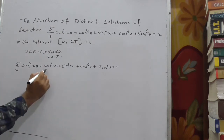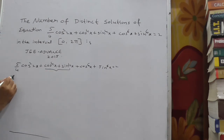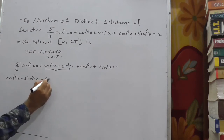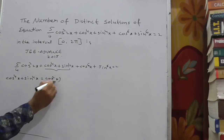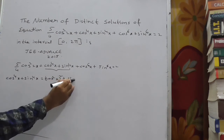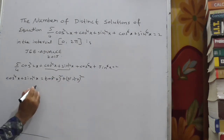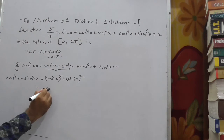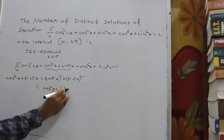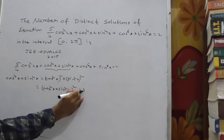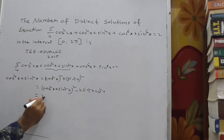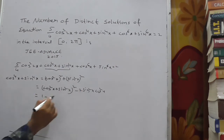First, let's simplify cos⁴x + sin⁴x. We write it as (cos²x)² + (sin²x)², which is of the form a² + b². Now a² + b² = (a + b)² − 2ab, so this becomes 1 − 2sin²x·cos²x.